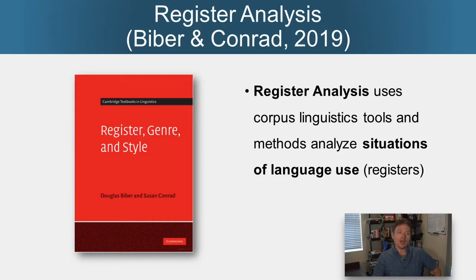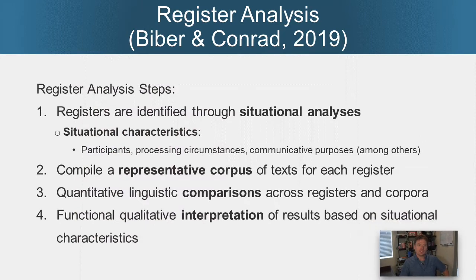I draw a lot on Biber and Conrad's 2019 register analysis, which uses corpus linguistic tools and methods to analyze situations of language use — what Biber and Conrad call registers. There are a couple steps in register analysis. The first is to identify different registers through a situational analysis, looking at different situational characteristics within a language use domain. Once you've identified these registers, you compile a representative corpus of texts for each register, do quantitative linguistic comparisons, and then interpret results through a functional qualitative interpretation based on situational characteristics.